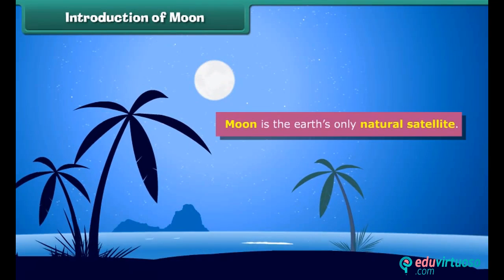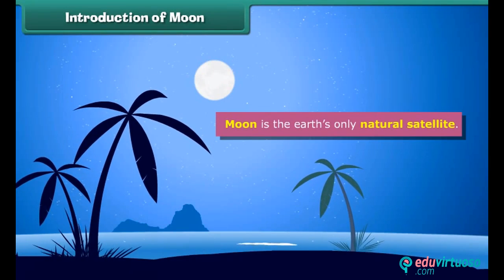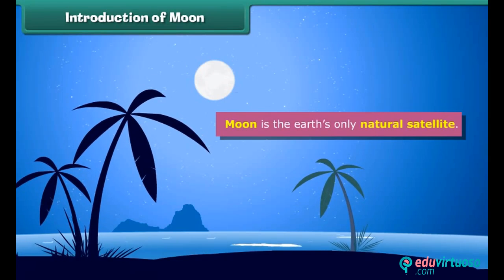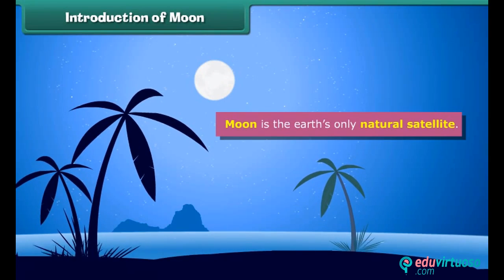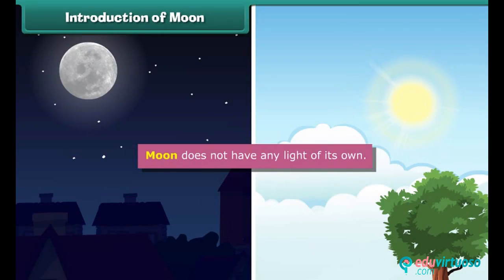The moon is the Earth's only natural satellite. It is the second brightest object in the sky after the Sun. However, the moon does not have any light of its own — the light you see is actually from the Sun reflecting off the surface of the moon. So if the Sun wasn't there, we would not be able to see the moon.